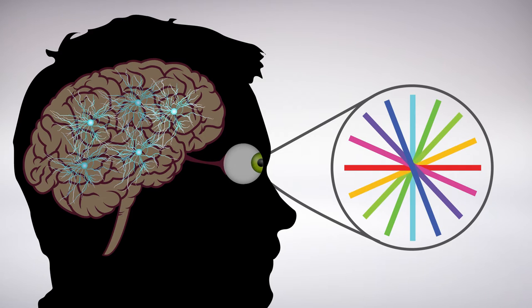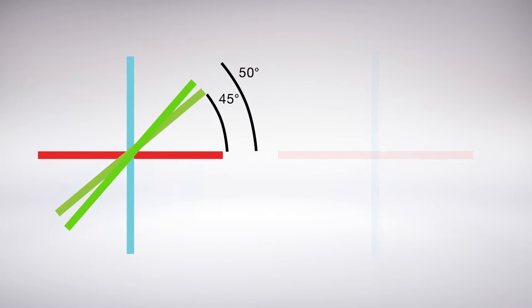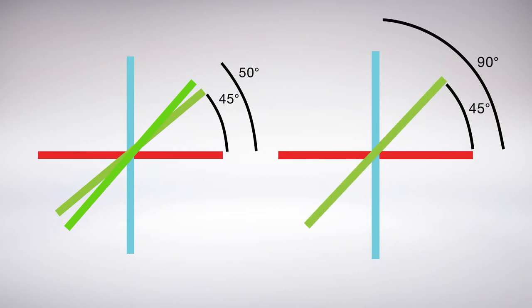But the extent to which neurons care about orientation, or their degree of selectivity, varies. Some are extremely choosy, distinguishing between 45 and 50 degrees. Others are more lax, responding only to large differences, like between 45 and 90 degrees.